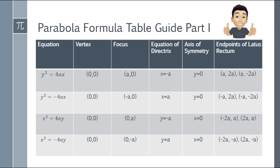Moving on, we are now at the parabola formula table guide, Part 1. It looks complicated but I promise it's easy. We have four equations, each with a corresponding vertex, focus, equation of the directrix, axis of symmetry, and points of the latus rectum. I won't elaborate too much on this because I'll help you with techniques when we solve the questions.